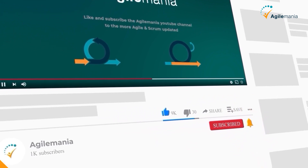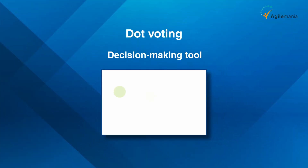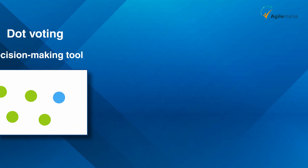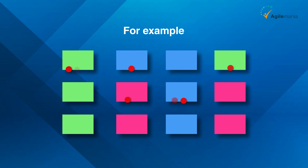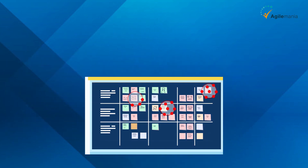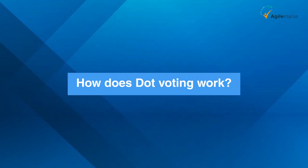Dot voting is usually considered a decision-making tool and an agile estimation technique. For example, dot voting is preferred to select the most important two to three items during a sprint retrospective. However, it can also be used to estimate user stories when there is a relatively small set of items and we don't want any complex techniques. So how does dot voting work?